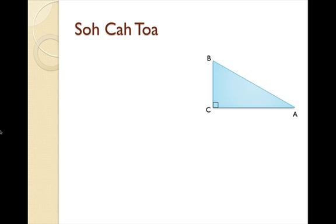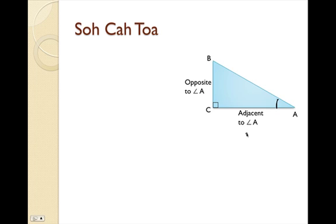Before we learn what SOHCAHTOA is, let's refresh our memory about how to label a triangle. We've got a right triangle here, triangle ABC. If we have angle A and we want to find its adjacent side, that's going to be the side that touches the vertex of angle A — so the adjacent side is AC. The opposite side to angle A is BC, which doesn't physically touch the vertex of angle A at all. And then our hypotenuse is side length AB.